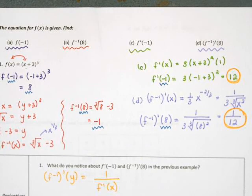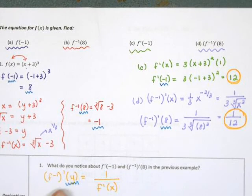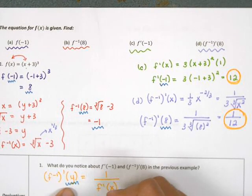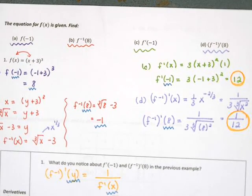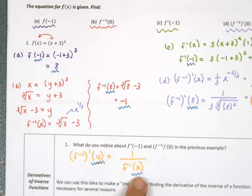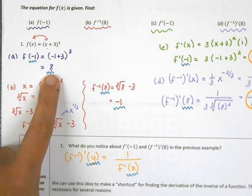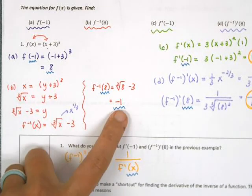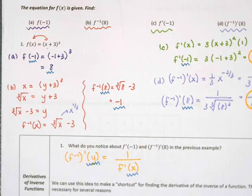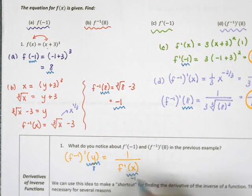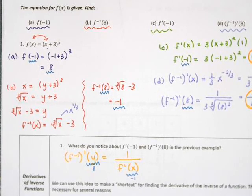But the numbers we plugged in were different. In the original we plugged in −1, and in the inverse we plugged in 8. The reason is that the input of the inverse is a y value of the original, while the input of the derivative is an x value of the original. When we plugged in −1 we got 8, and vice versa — those numbers are partners; the x's and y's go together.